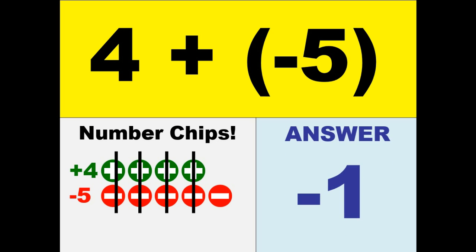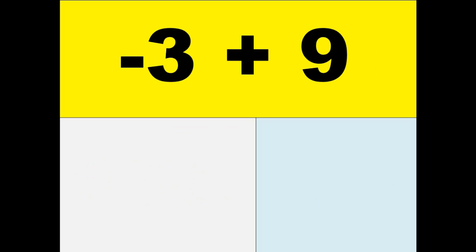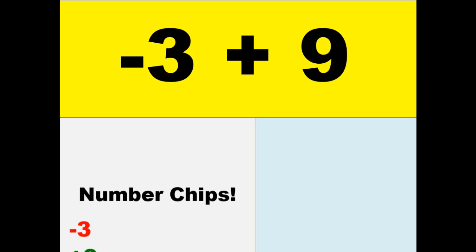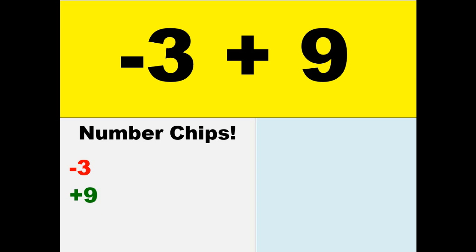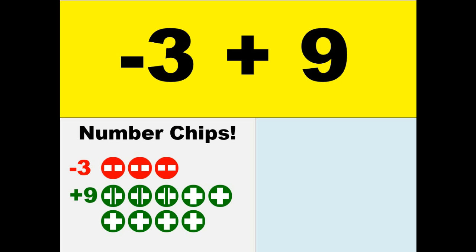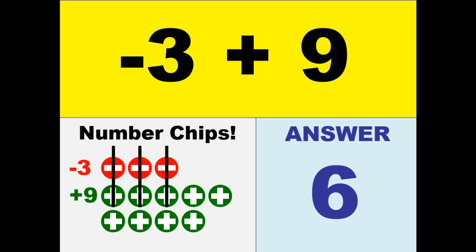Let's continue: negative 3 plus 9. Using the number chips, we have 3 negative chips and 9 positive chips. Cancelling all the negative and positive, we still have 6 positive chips. Therefore, our answer is positive 6.